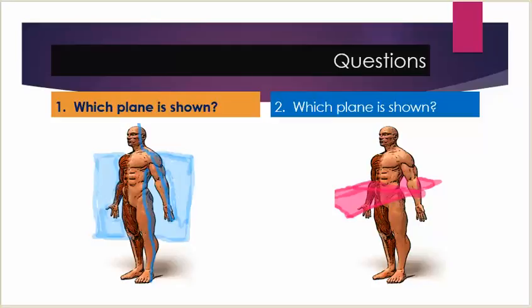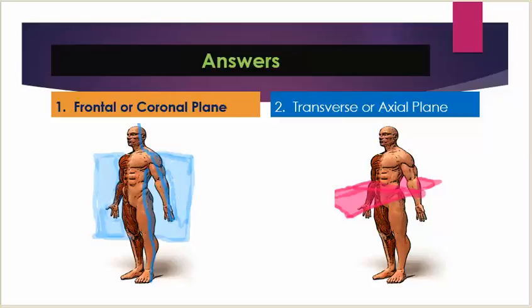Questions. Number one and number two: name the planes that are being shown. Number one is the frontal or coronal plane. Number two is the transverse or axial plane.